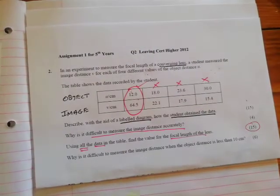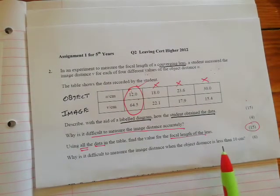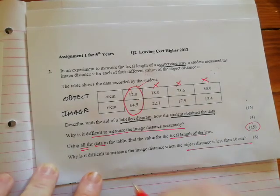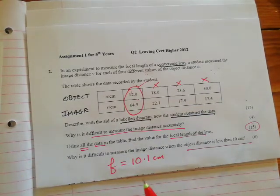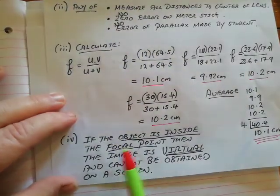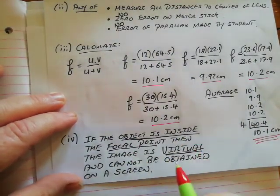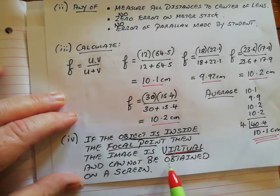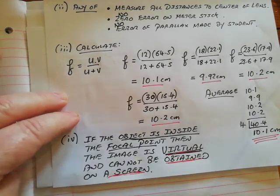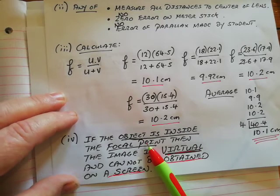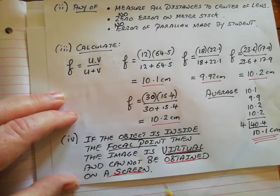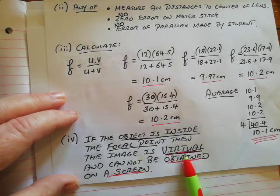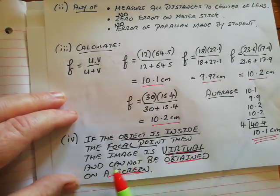The last question, let's have a quick look at the last question. Why is it difficult to measure the image distance when the object distance is less than 10? Now we've just calculated a focal length of the lens of 10.1 centimeters. What happens if you put an object inside the focal point? Well, the best answer possible is this. If you put an object inside the focal point, the image is said to be virtual. And a virtual image cannot be obtained or found on a screen. So if you put an answer down, object is inside the focal point, you would have got the six marks there. If you said the object in this case was virtual, you would have got the six marks. Or if you did both, if the object is inside the focal point, the image is always virtual. You can see with your eye, but you cannot get them on a screen.